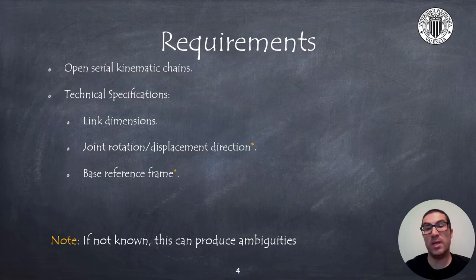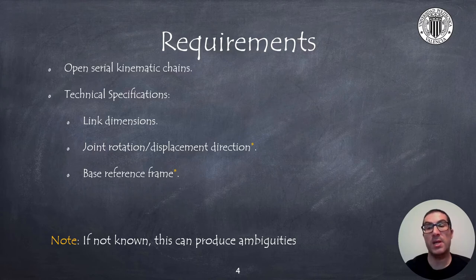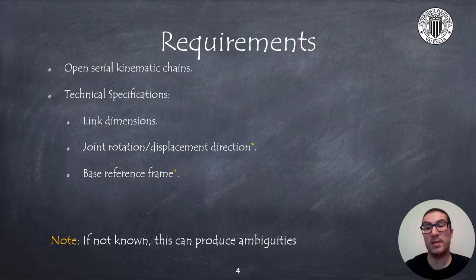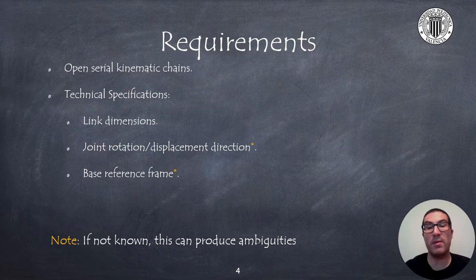If you know this data, then the solution of the forward kinematics is unique. However, in many academic examples, some of these aspects are not given, which produces a series of ambiguities, since we will be able to freely choose the most convenient option. Despite these ambiguities, the forward kinematic solution is basically the same, which means that there are multiple ways to produce the same result.